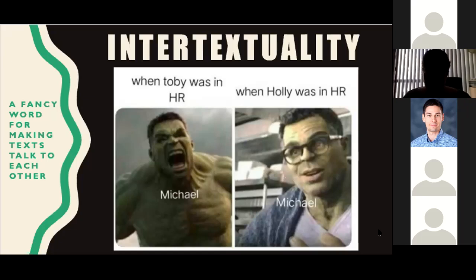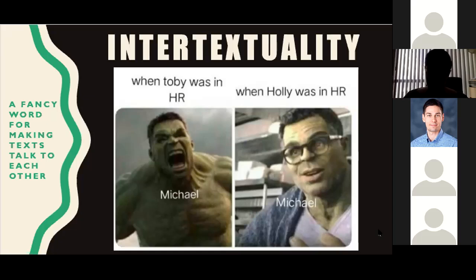We constantly use one thing to help us understand another thing. We constantly look at things that talk to each other to help us understand those concepts better. Even if we look at dictionary definitions, we're relying on other words to understand an original word. If you look up something like 'dog' in the dictionary, Merriam-Webster says: 'a highly variable domestic mammal closely related to the gray wolf.' So we have to know what domestic is, what a mammal is, what a gray wolf is — to understand that original concept. So those are all different texts, different concepts talking to each other.